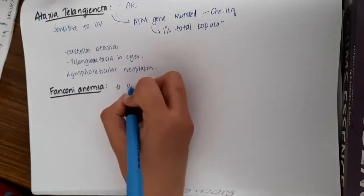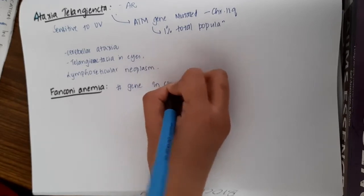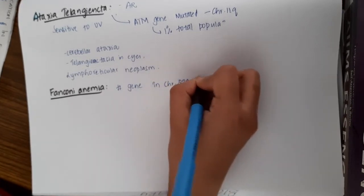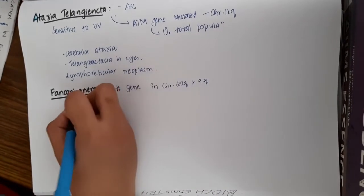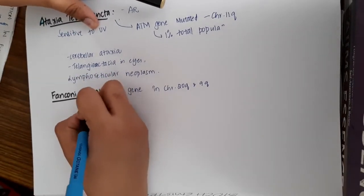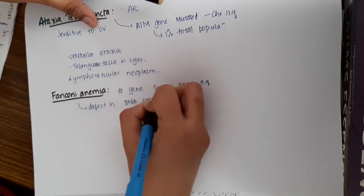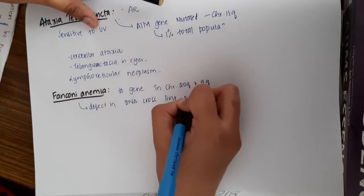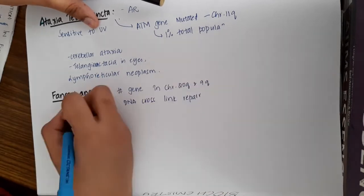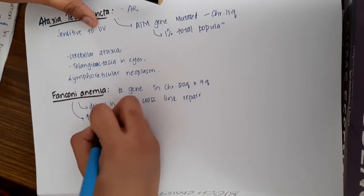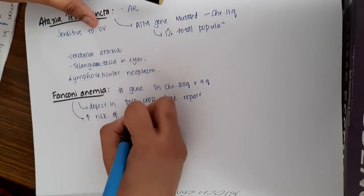The next DNA repair mechanism defect is Fanconi's anemia. This occurs due to defective genes on chromosomes 20Q and 9Q. Here there is a defect in DNA cross-link repair. Fanconi's anemia also increases the risk of cancer in those patients.